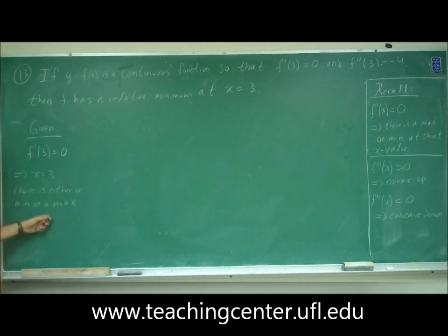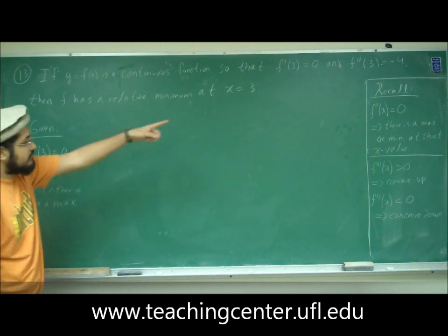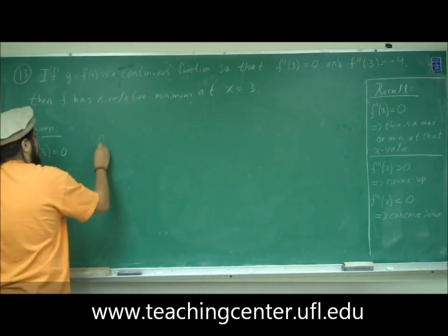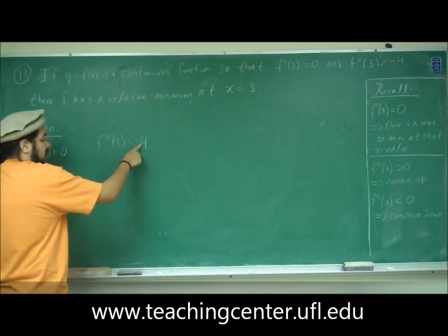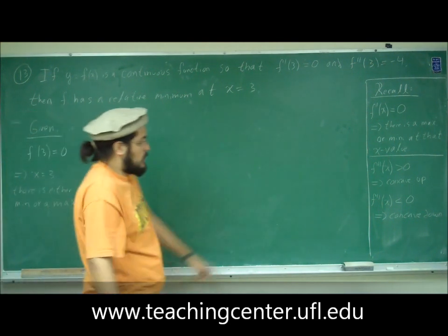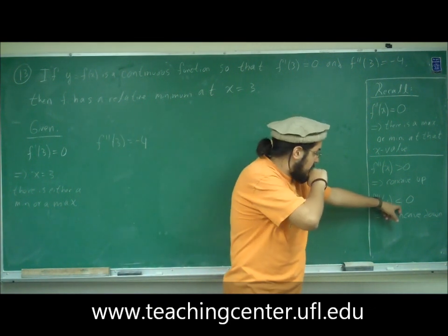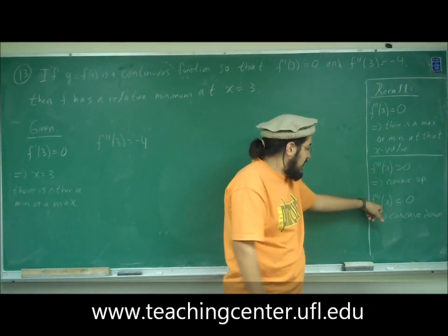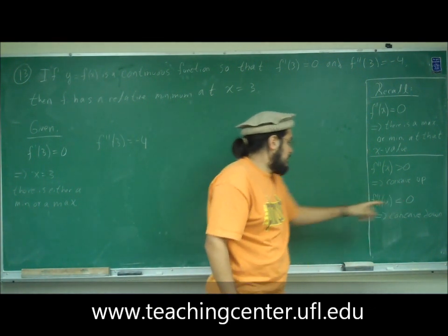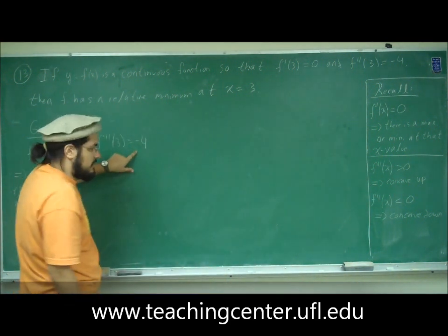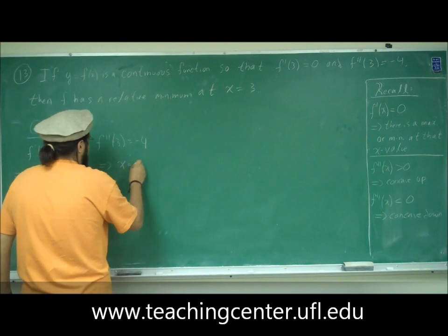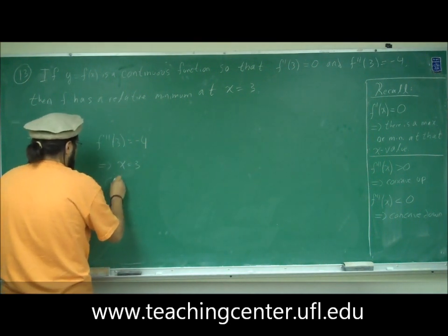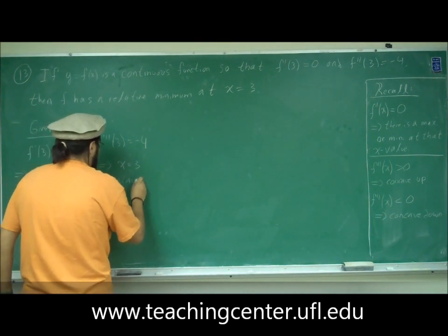So we don't know yet. However, they give us f double prime of 3 is negative 4. Negative 4 is less than 0. So according to the second derivative test with concavity, if f double prime of x is less than 0, in this case it is negative 4, then it's concave down. This implies that at x equals 3, it's concave down.